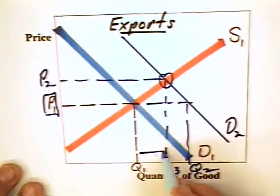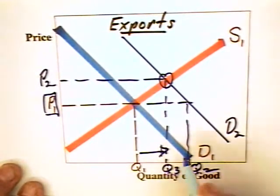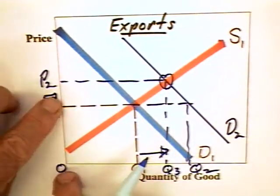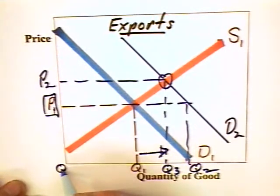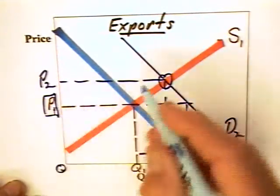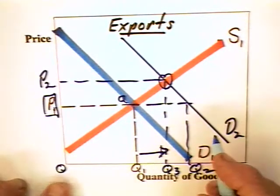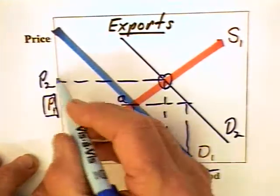The price will go from P1 to P2. This means that producers can gain, producers of the exported product can gain by expanding production from Q1 to Q3. They also gain because their revenues go from P1 times Q1, which is one rectangle side times the other rectangle side, with the area bounded by 0, P1, A, Q1, representing the revenue prior to international trade.